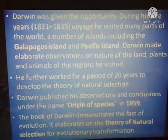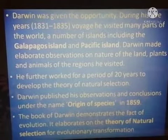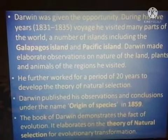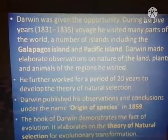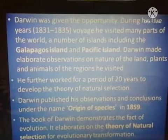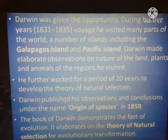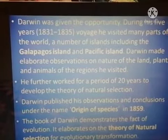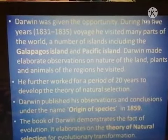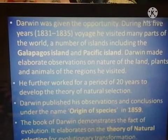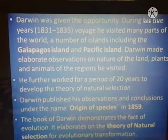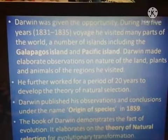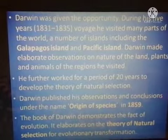There were many plants and animals in the Kalapakos Islands. Naturally, he observed how each organism — whether plant or animal — was surviving in that environment, how it was adjusting, how it was fitting in that particular environment. He observed in great detail. He then worked for a period of 20 years to develop the theory of natural selection based on those five years of experience.